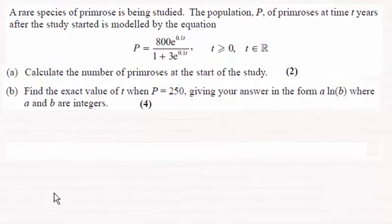Hi there. Now in this video we're going to look at these two parts to this question where we're given this equation for the population P of primroses at time t years. We're asked in the first part to calculate the number of primroses at the start of the study. So at the start of the study, t is going to be equal to zero. We just need to substitute t equals zero into there.